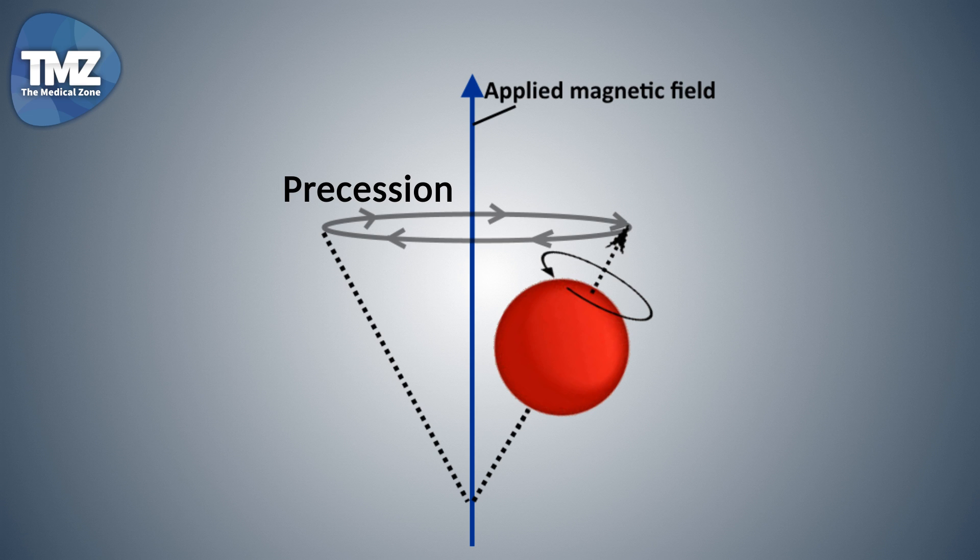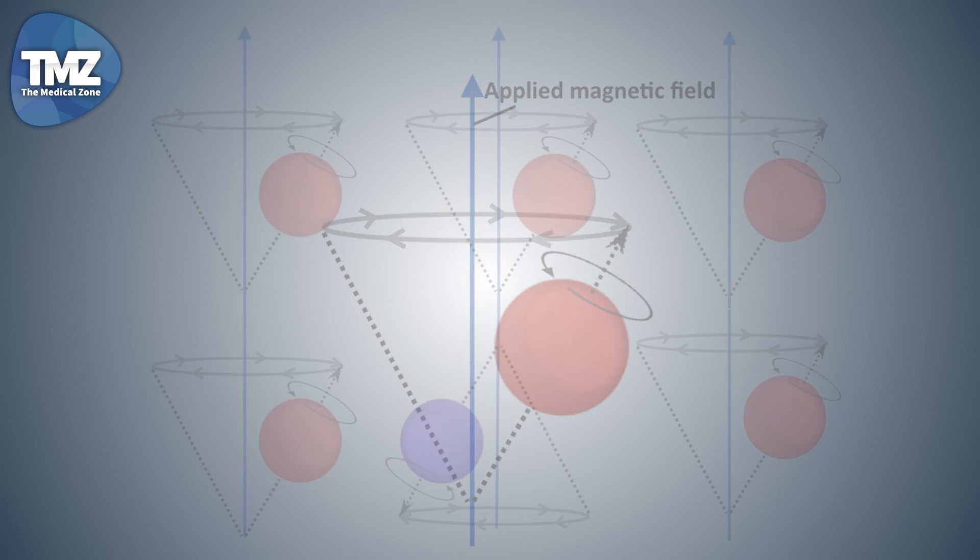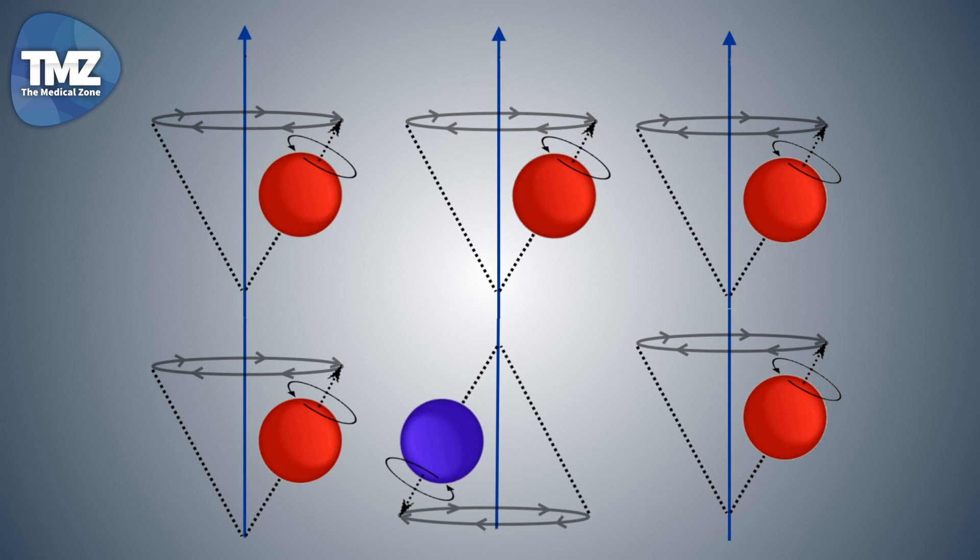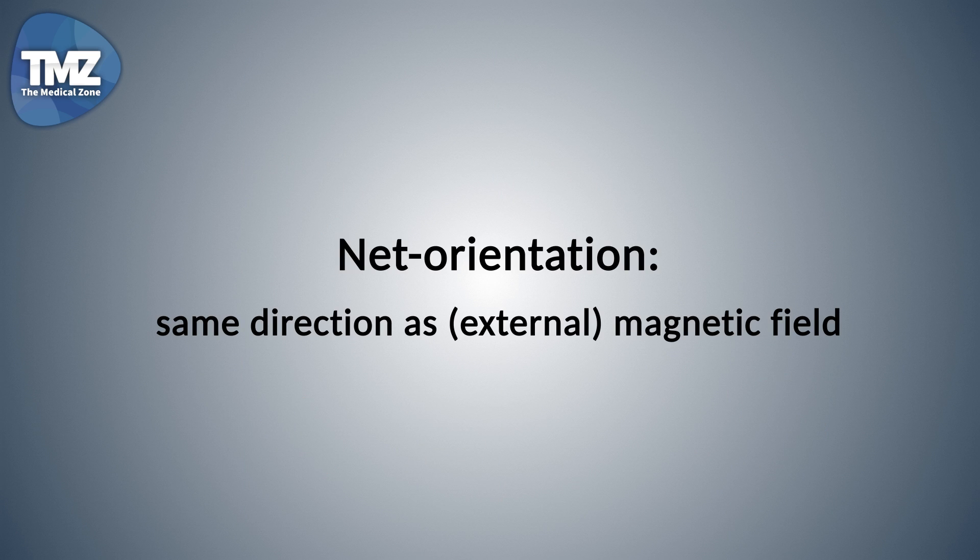Also after applying the magnetic field, a small percentage of the proton's axes are pointing towards the opposite direction, so against the field. This is because protons are just very weak magnets, but it's important to remember that the net orientation is alignment with the field.